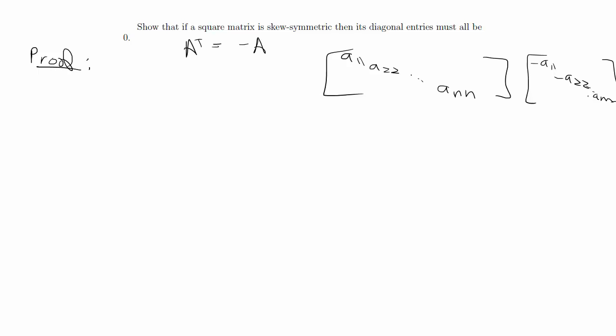So this should be negative, negative, negative. It makes sense that zero is going to be equal to negative zero, but obviously we need to prove that formally.